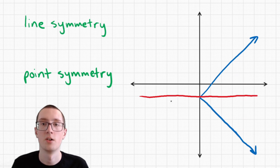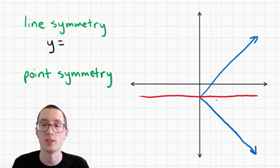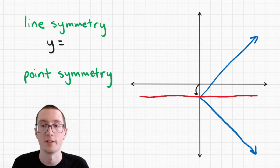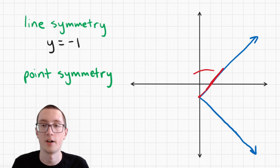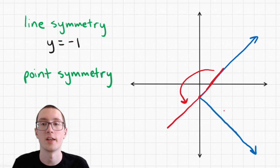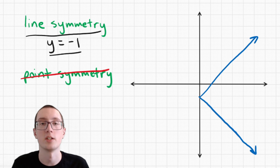What is the equation of this line? Remember, the letters are usually the opposite of what you might think. We have a left-and-right line here, but because x means left and right, the equation is actually going to have y in it. Everything on this line has the same up-and-down value, which is negative 1, because we go down 1 to get to this line. So the equation is y equals negative 1. Now does this have point symmetry? If we rotate this part of the graph 180 degrees, it does not line up at all, so no, we do not have point symmetry. Our final answer is line symmetry at y equals negative 1.